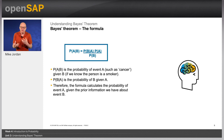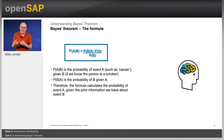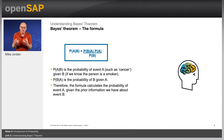There are three parts to this calculation: the probability of the evidence conditional on the hypothesis, P(B|A); the prior probability of the hypothesis, P(A); and the prior probability of the evidence, P(B).